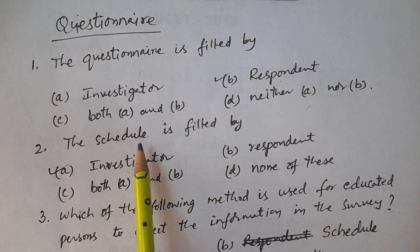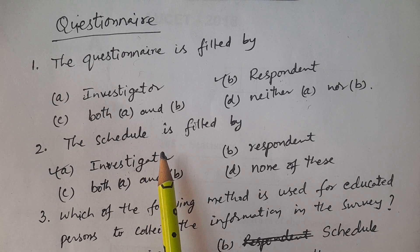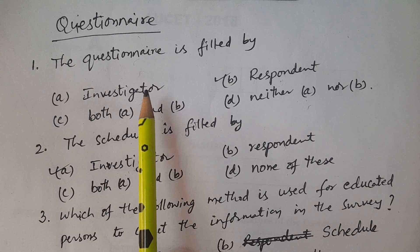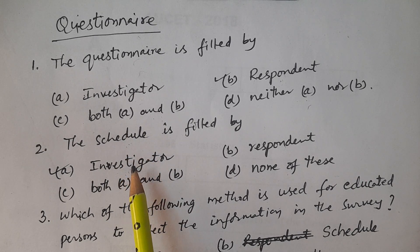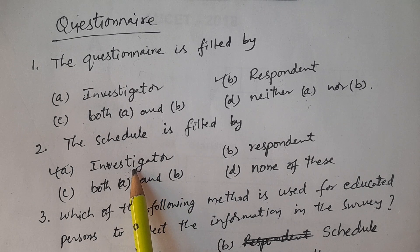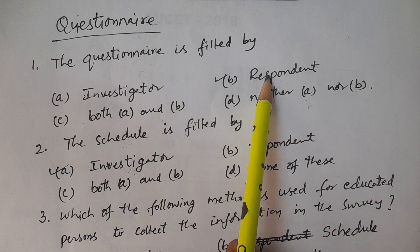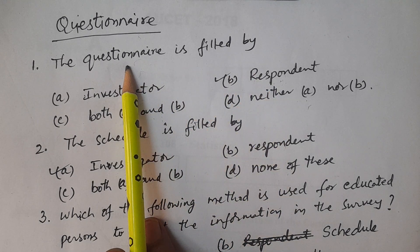Both questionnaire and schedule are types of data collection instruments where particular questions are constructed and furnished on paper. The schedule is filled by the investigator, who collects information from the respondent and records the answers by asking questions one by one. That document is called a schedule.